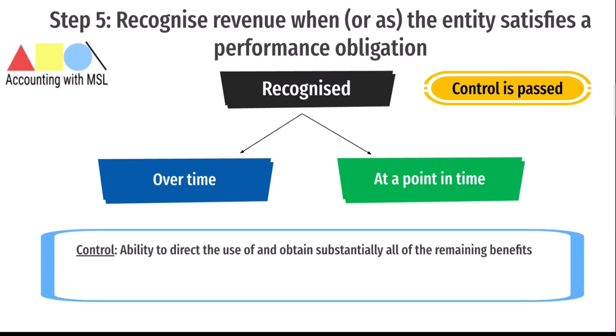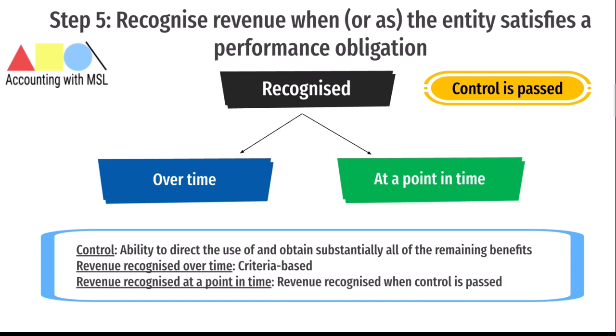An entity is deemed to recognize revenue over time if certain criteria are met — for example, the customer simultaneously receives and consumes all the benefits provided by the entity as the entity performs; the entity's performance creates or enhances an asset that the customer controls as it is created; or the entity's performance does not create any asset with an alternative use to the entity and the entity has an enforceable right to payment for performance completed to date. If an entity does not satisfy its performance obligation over time, then it satisfies it at a point in time, and revenue is recognized when control is passed at that point.